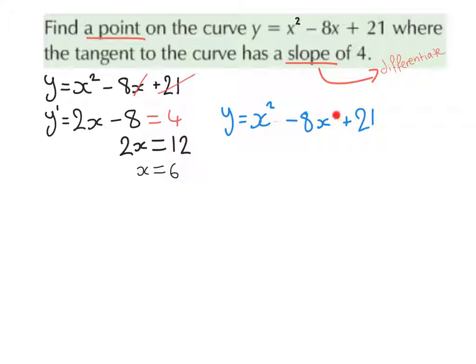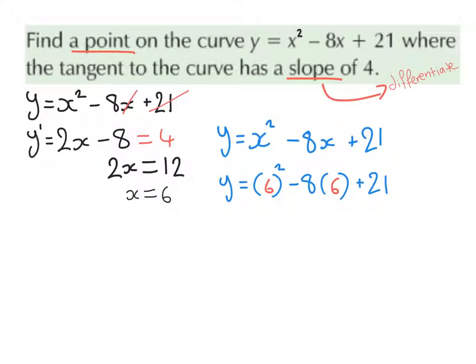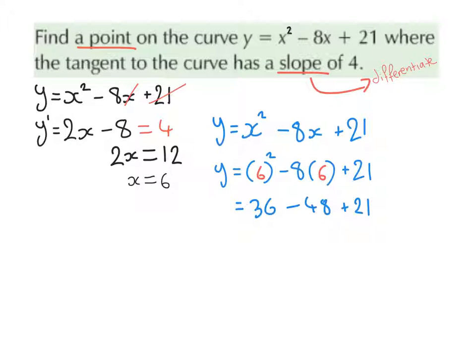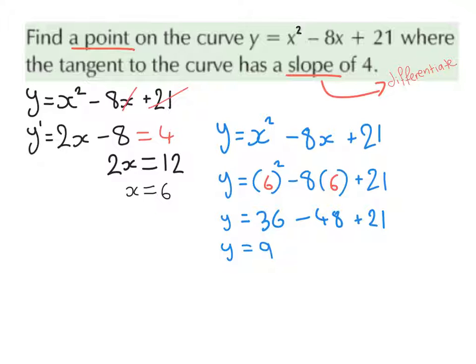So our original function is y equals x squared minus 8x plus 21. So we substitute in 6 in place of both x's, which gives us 36 minus 48 plus 21, which gives us y is equal to 9.